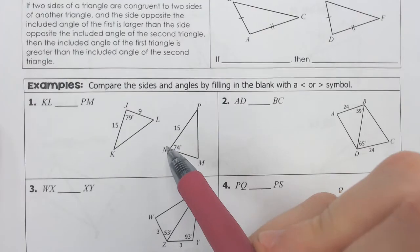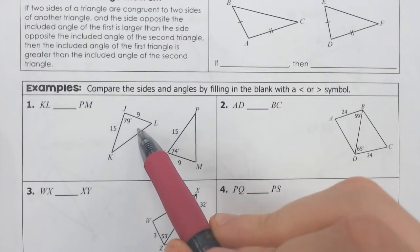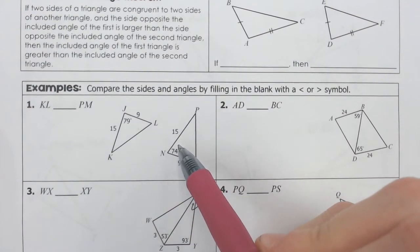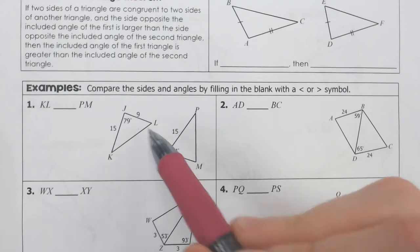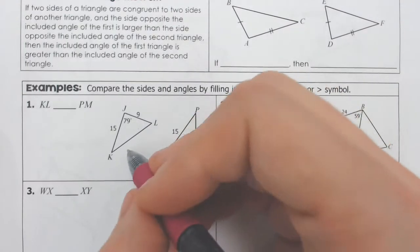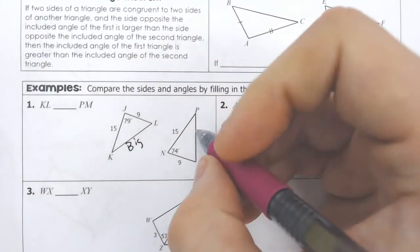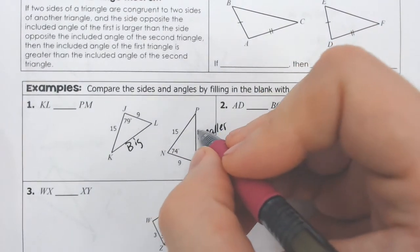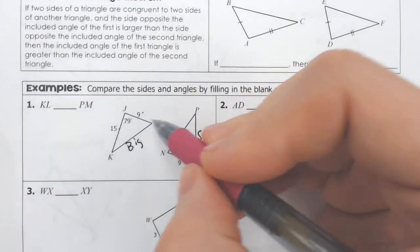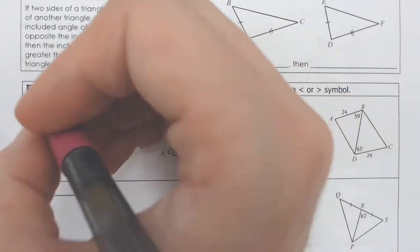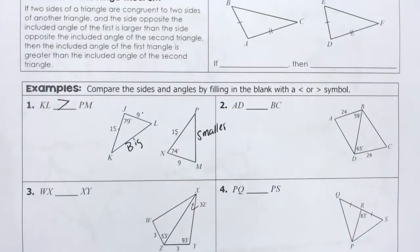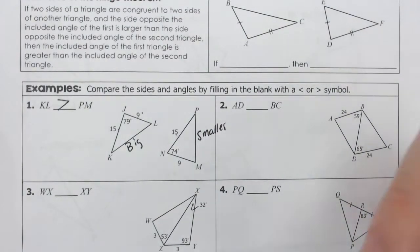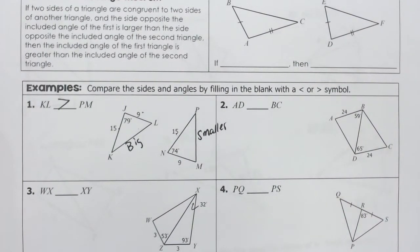Looking at these guys right here, which angle is bigger, 79 or 74? Well, from my last calculation, 79 is bigger, which means KL has to be bigger, and PM would have to be smaller because it is across from 74, and the 9 and 15, and the 15 and 9 were both the same side. So KL has to be greater than PM. That's it. Don't overthink it. Don't go any further than that.